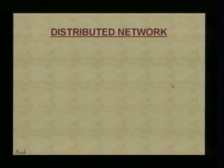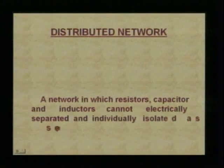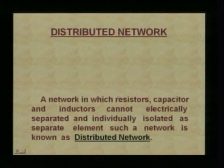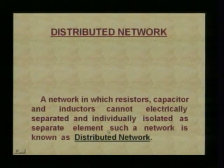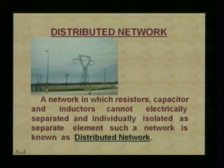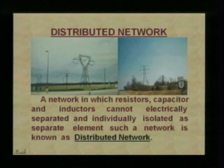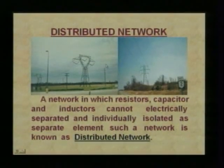Let us talk about the distributed network. Lumped means all things are kept at one particular place. Whereas in a distributed network, resistors, capacitors, and inductors cannot be electrically separated and individually isolated as separate elements — such a network is known as a distributed network. An example is transmission lines: the wires have resistance, inductance, as well as capacitance, which is not lumped together but is present over all the line.